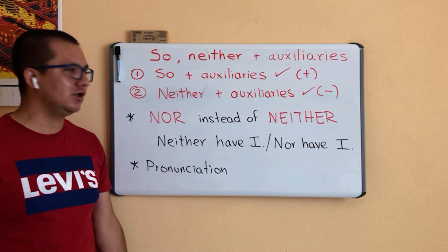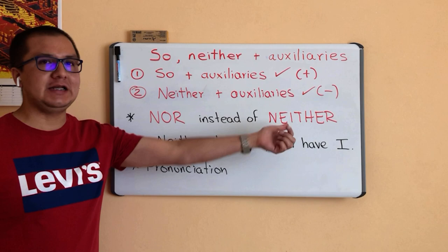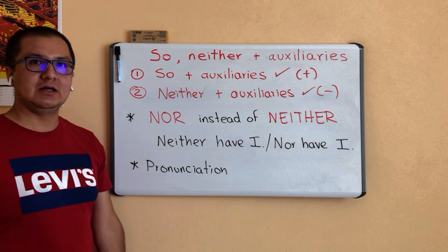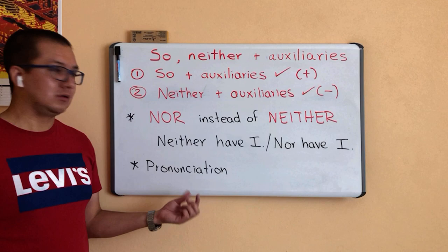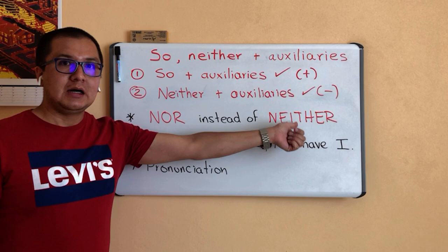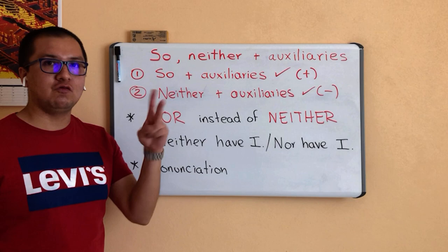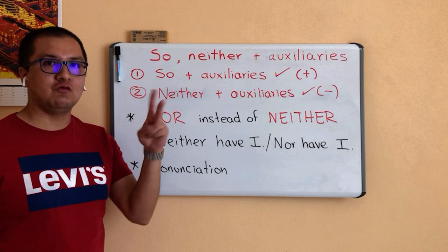Just to finish this presentation: you can use the word NOR instead of NEITHER. For example, you can say 'Neither have I' or 'Nor have I' — both options are correct. Regarding pronunciation: some people say 'NEEther' and other people say 'NYther' — both forms are correct. Neither and neither. This is the end of the presentation. In case you have any questions, you can ask them after this presentation. Thank you very much, see you guys.